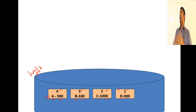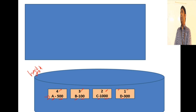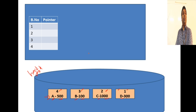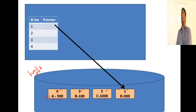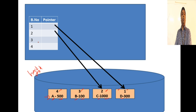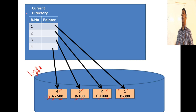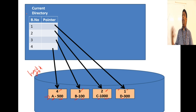In shadow paging, the first step is that on the RAM (main memory) a directory is created. The directory contains block numbers and a pointer to every block. From the directory you should have a pointer to every block on your disk. For block number one, the pointer points to exactly where that block is on the disk. Likewise for blocks two, three, and four - this becomes the current directory.